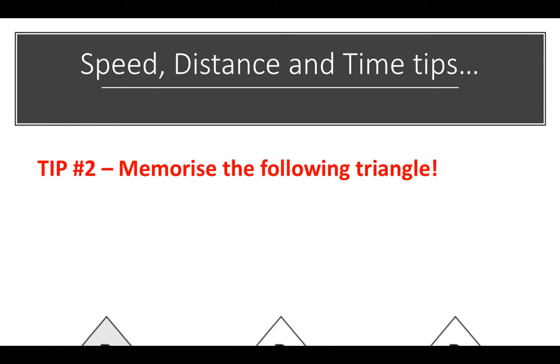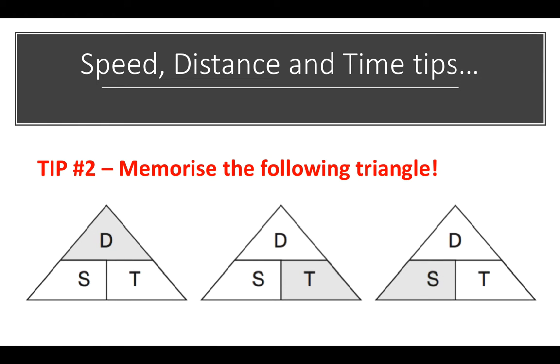Now, the second one is to memorize the following triangle, and I put three triangles up here, even though the parameters on each one are the same. So you can see that the D for the distance is at the top, at the bottom left, you've got S for speed, and the bottom right, you have time. Now, each one of these you'll see on the triangle is a shaded part.